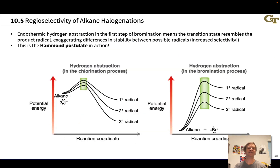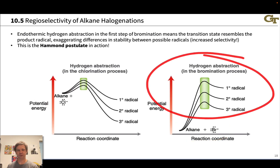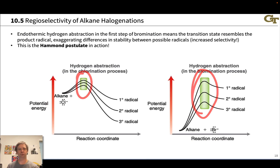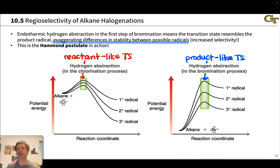Now we're going to explain the origin of this greater selectivity of bromination as opposed to chlorination. Hydrogen abstraction — the first step of propagation — is exothermic for chlorination but endothermic for bromination. Although this slows down the rate of bromination, this enhances the selectivity. Notice the separation between transition state energies in the bromination reaction is much greater than in the chlorination reaction. The basis of this can be explained by the Hammond postulate — the transition state in bromination is product-like and in chlorination is reactant-like.